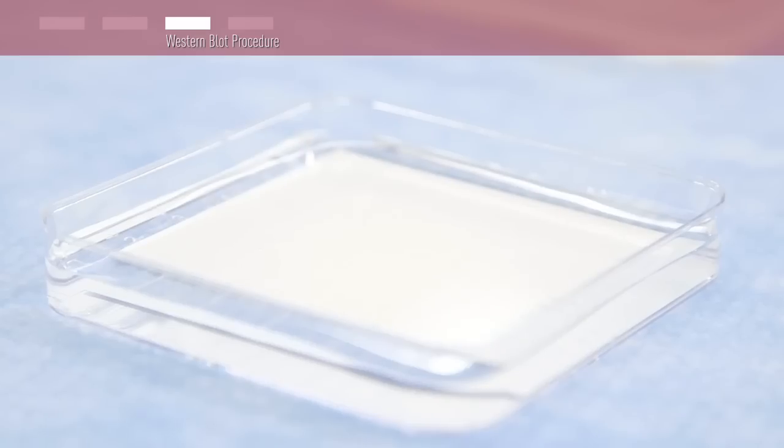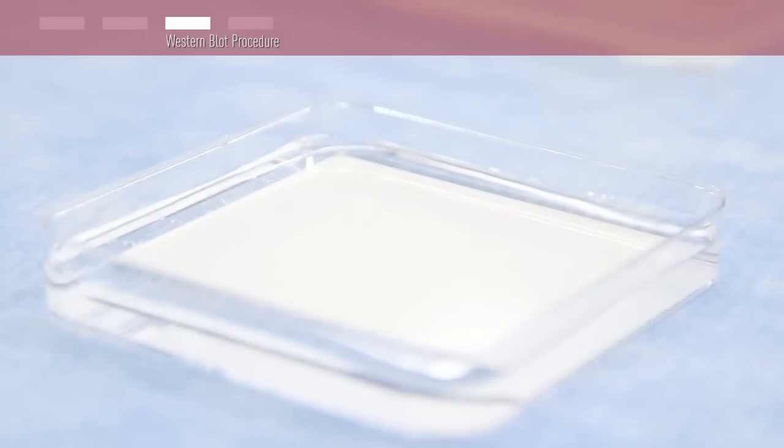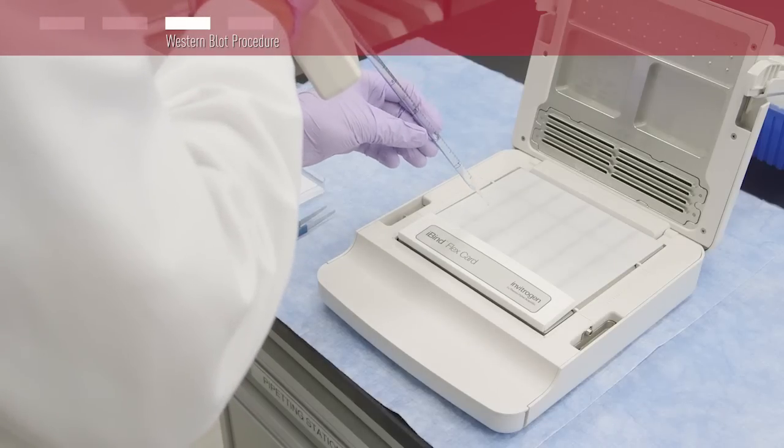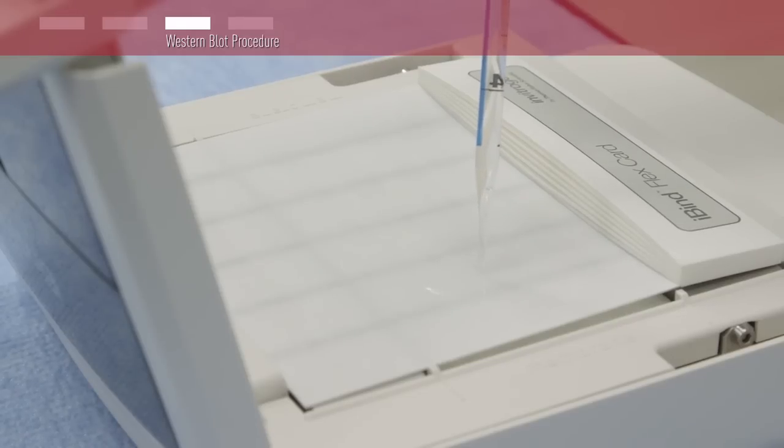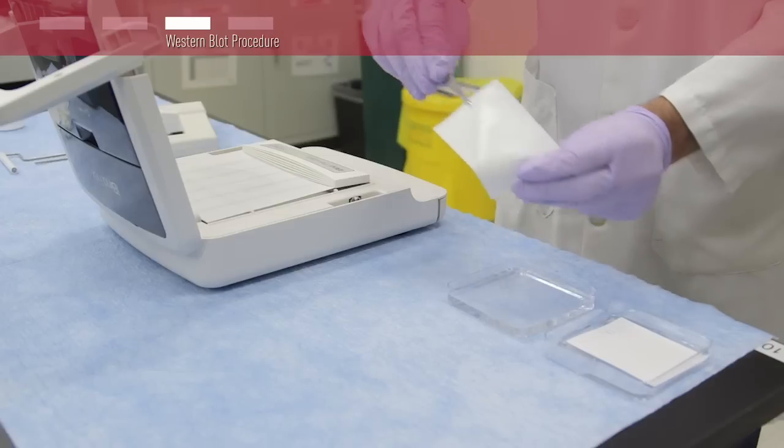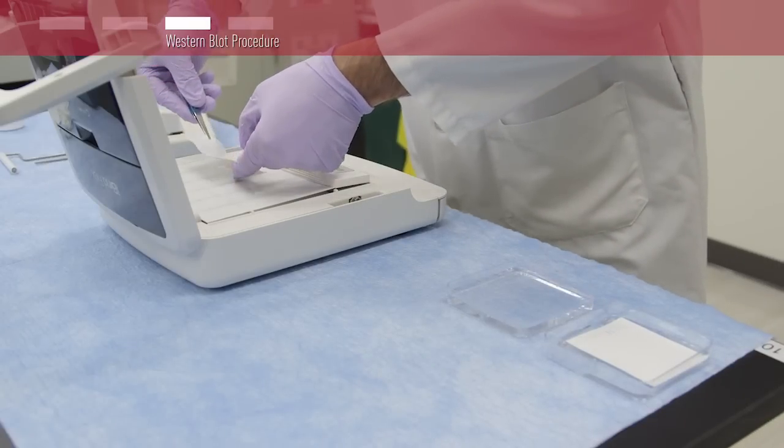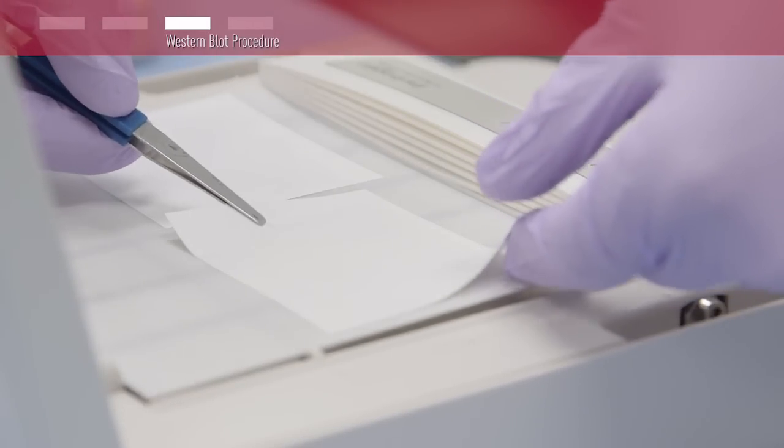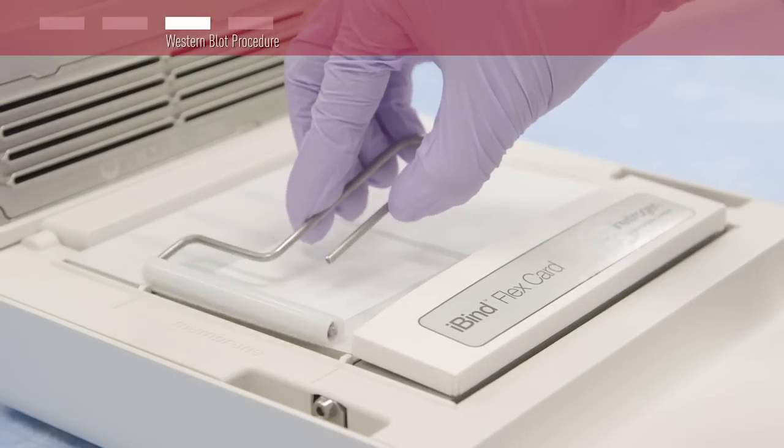In order to process up to 2 mini blots, first make sure the mini well insert is installed. Add an additional 1 milliliter of 1X iBind Flex solution for each blot to the card, allowing it to pool per the quick reference card for mini sized blots. Use the center alignment guide to place your blots on either side. Continue with rolling the blots to remove air bubbles.